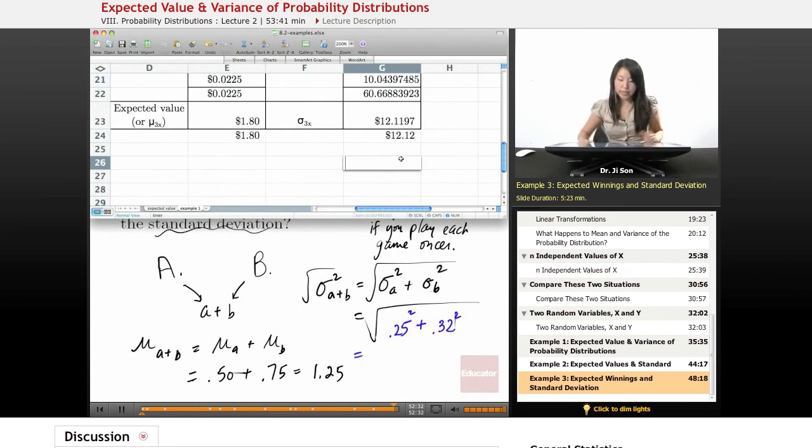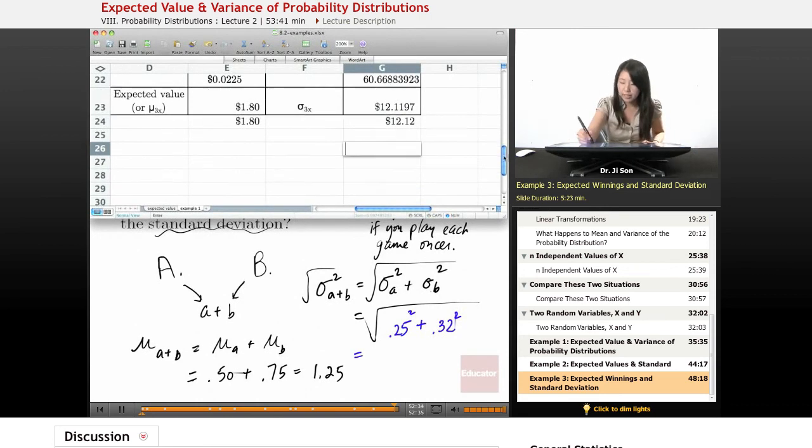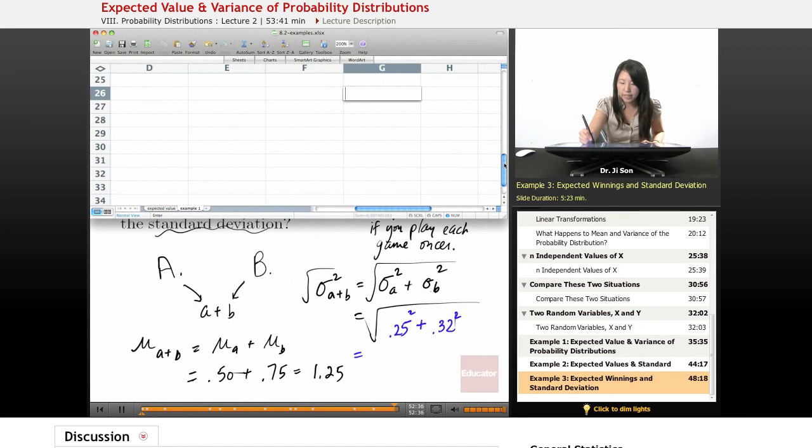Well, I'm just going to use one of these rows to help me out here, just so I could calculate something. So here I'm going to write square root of 0.25 squared plus 0.32 squared. And the nice thing is Excel, sometimes better than us, knows order of operations.